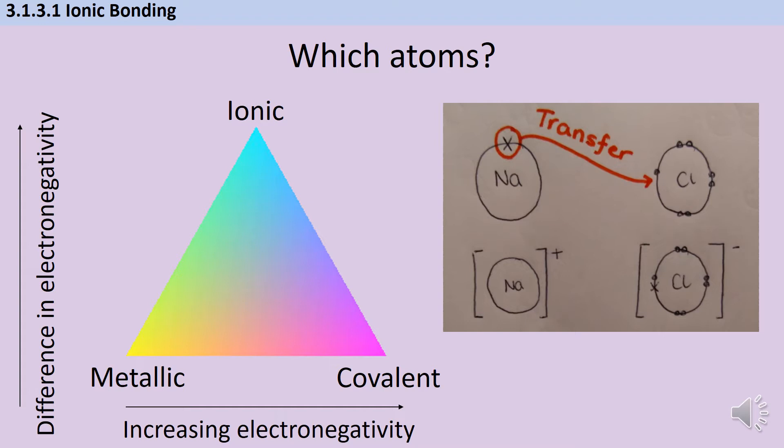The classic example is sodium chloride. A sodium atom will lose its one outer shell or valence electron, which will be taken on by a chlorine atom, leaving us with an Na+ ion and a Cl- ion.